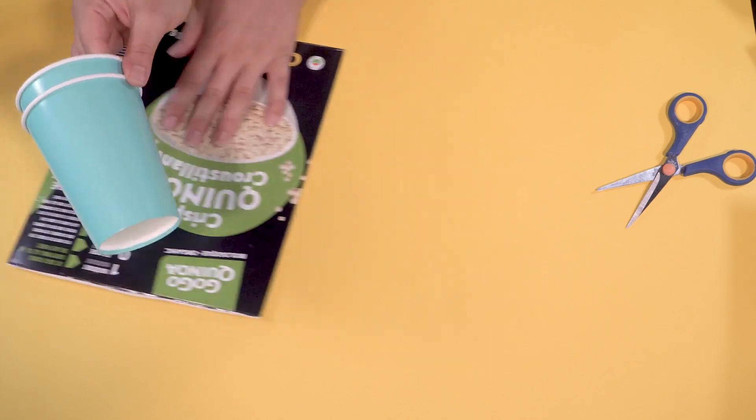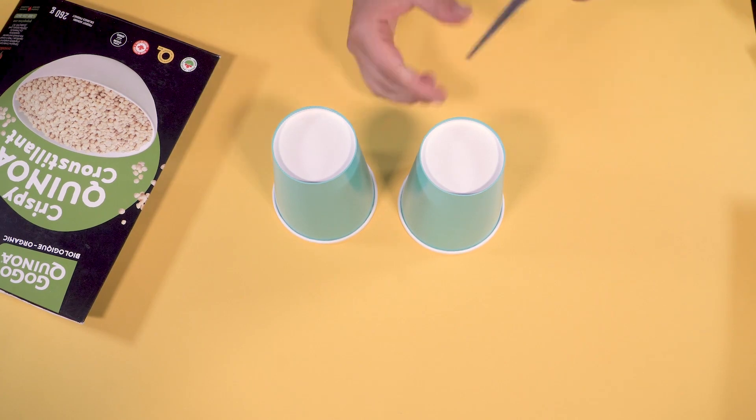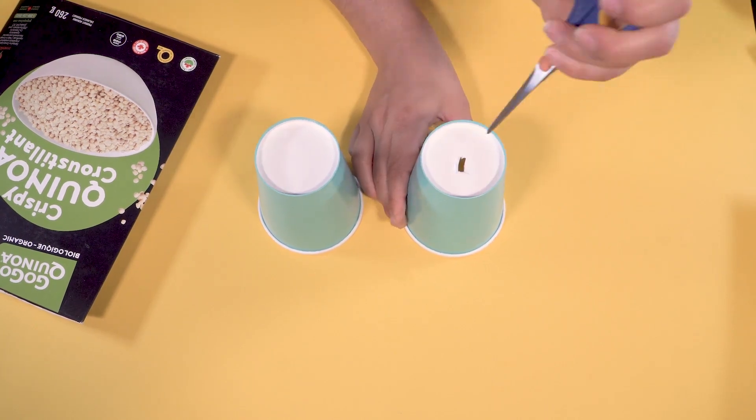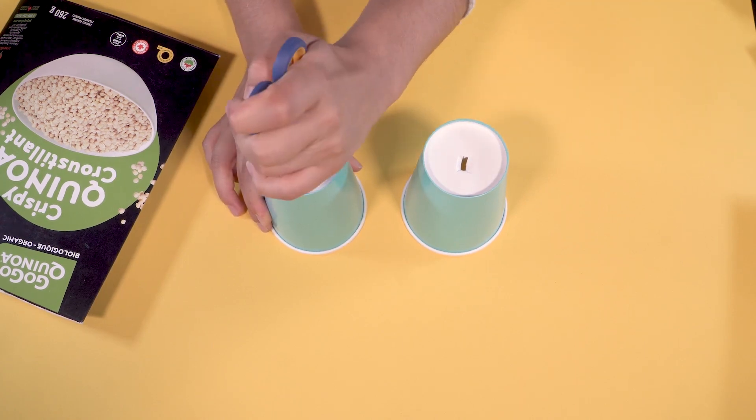Next, get your two cups. Poke a hole in the bottom with your scissors. Careful here. You can always ask a grown-up for help. And cut out the bottom of the cups. Do this for both of them.